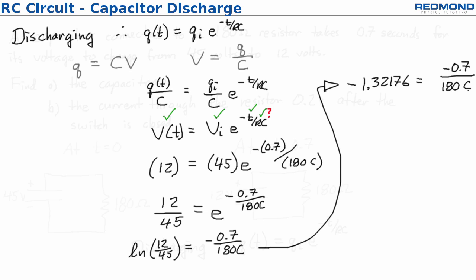At this point I can bring C to the left hand side and I'll drop that negative 1.32 to the bottom on the right hand side. So I have C is equal to negative 0.7 over 180 times negative 1.32. I can do the math for that and I find that the capacitance is 2.9 times 10 to the negative 3 farads.